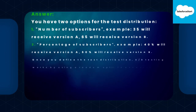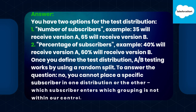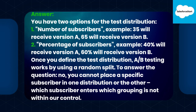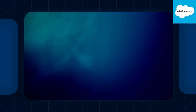Answer. You have two options for the test distribution: 1. Number of subscribers — for example, 35 will receive version A and 65 will receive version B. 2. Percentage of subscribers — for example, 40% will receive version A and 60% will receive version B. Once you define the test distribution, A/B testing works by using a random split. To answer the question: No, you cannot place a specific subscriber in one distribution or the other. Which subscriber enters which grouping is not within our control.